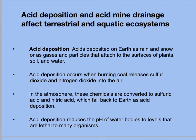Wet acid deposition, also known as acid precipitation or commonly called acid rain, occurs in the form of rain or snow. Dry acid deposition occurs as gases and particulates that attach to surfaces of plants, soil, and the surface of water. Acid deposition reduces the pH of water bodies from about 5.5 or 6 to below 5, which can be lethal to most aquatic organisms, leaving these water bodies devoid of all living species.